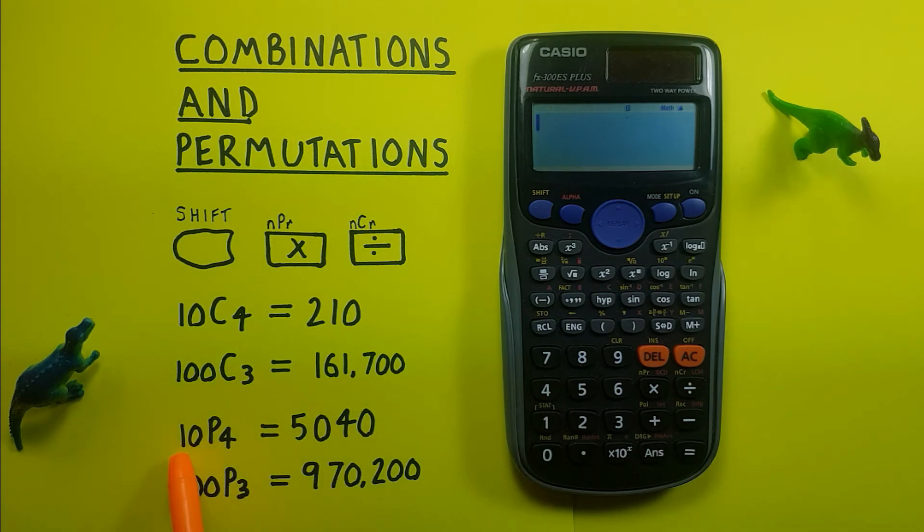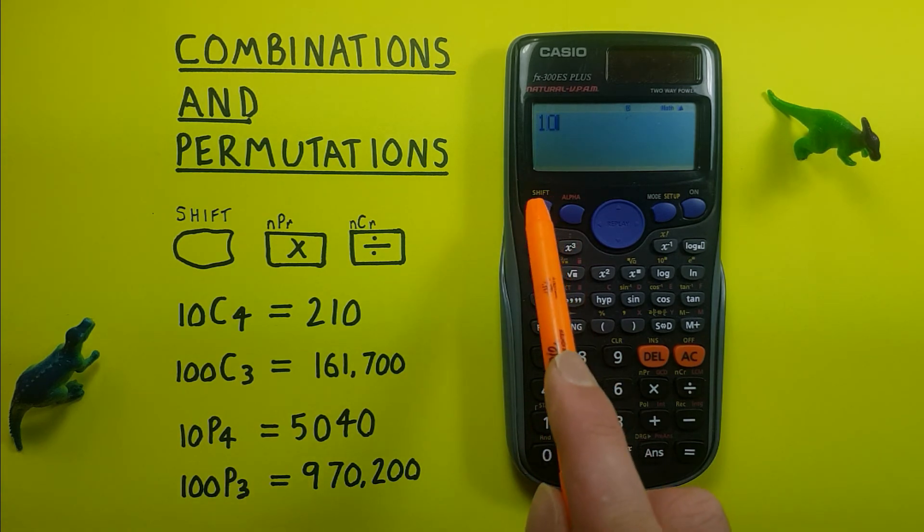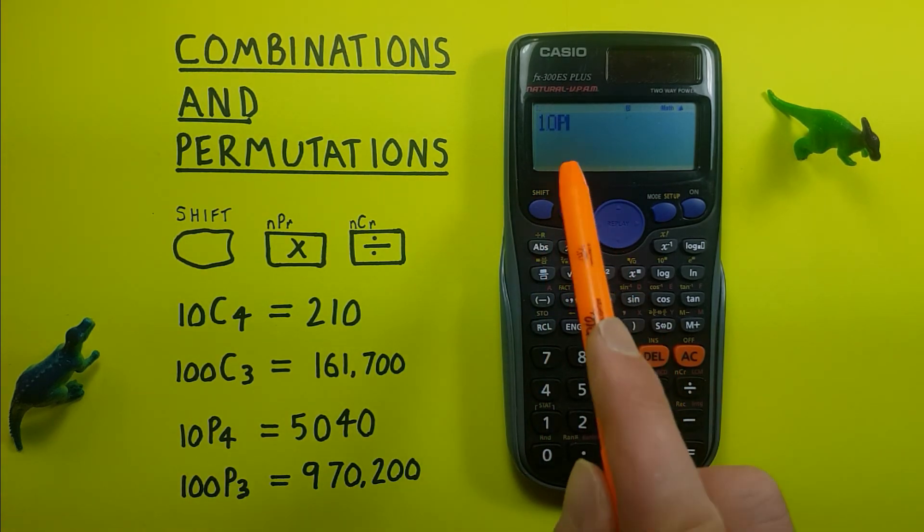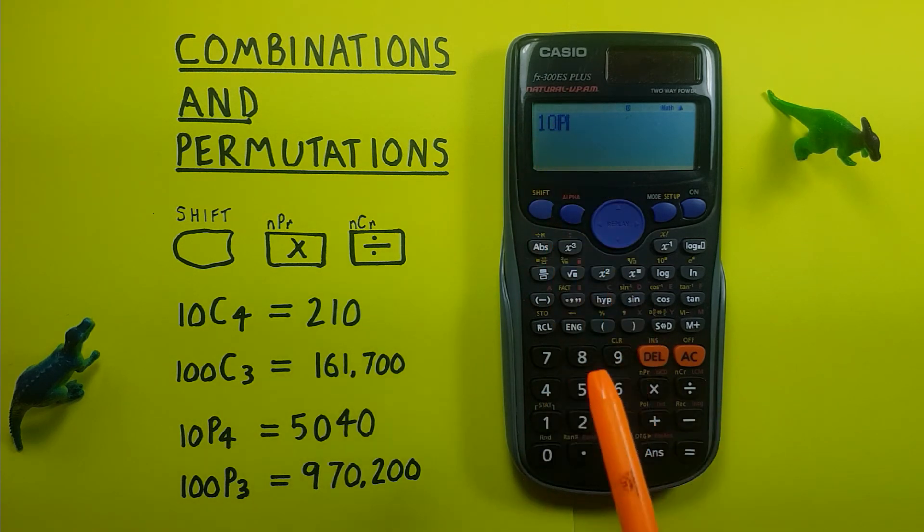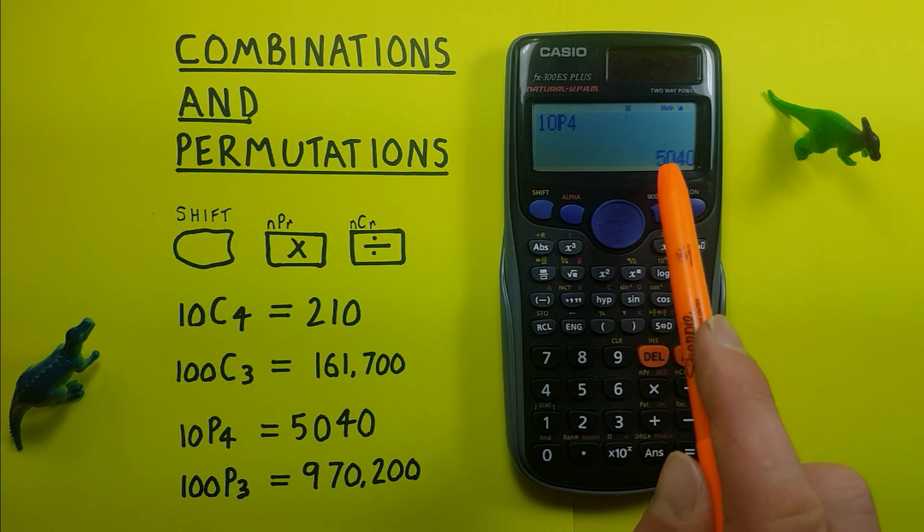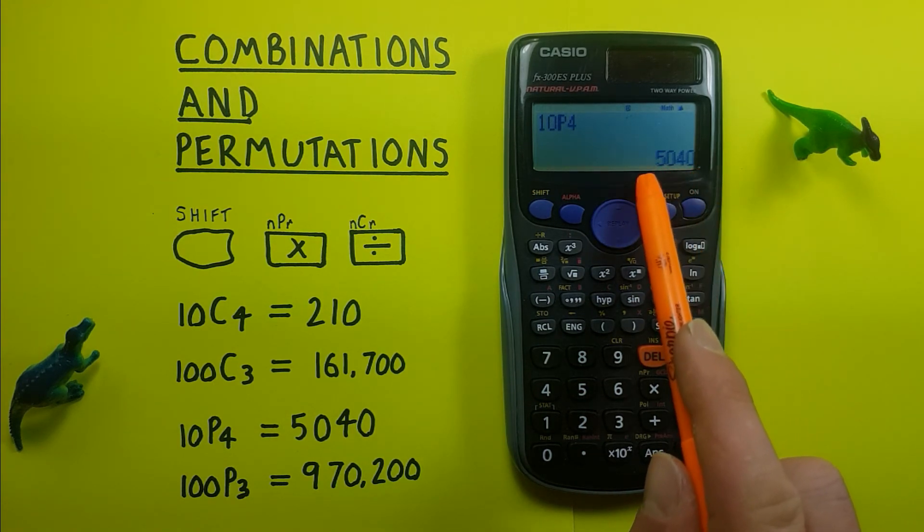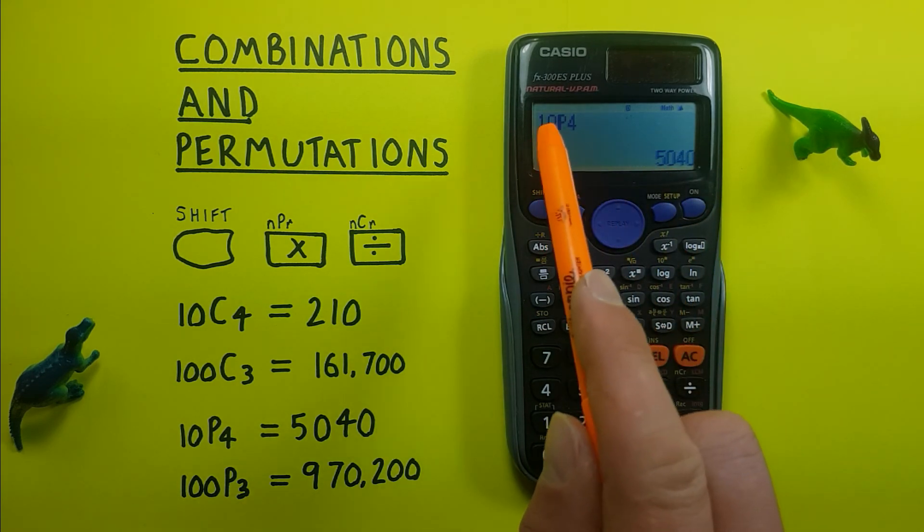For example, if we have 10 objects and want to choose 4, we enter 10 and this time use shift multiply. We see the P appear there. We then enter 4 and equals, and we get our result, which is 5,040. So there are 5,040 possible permutations when choosing 4 objects from a set of 10.